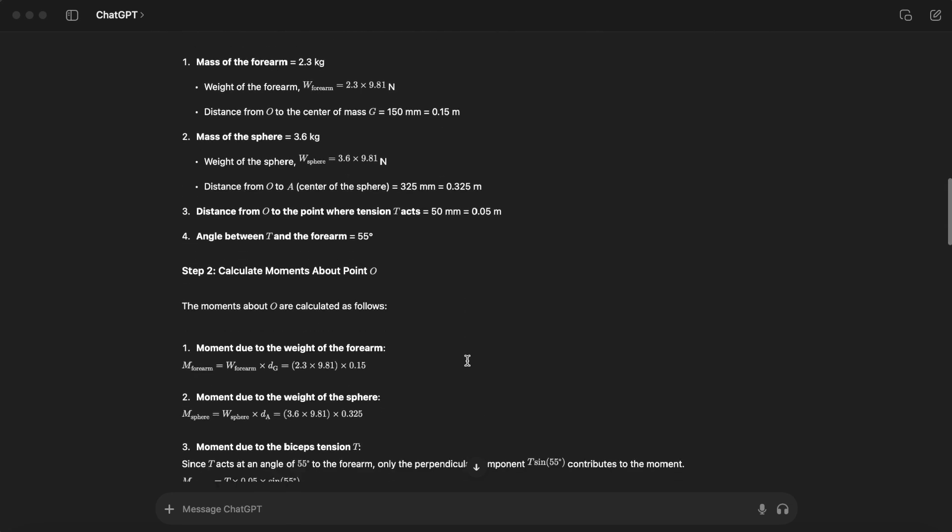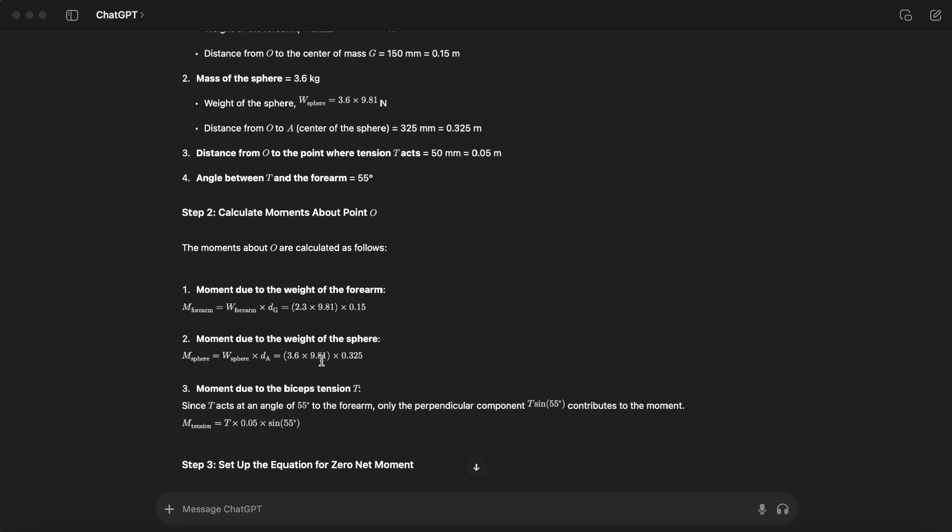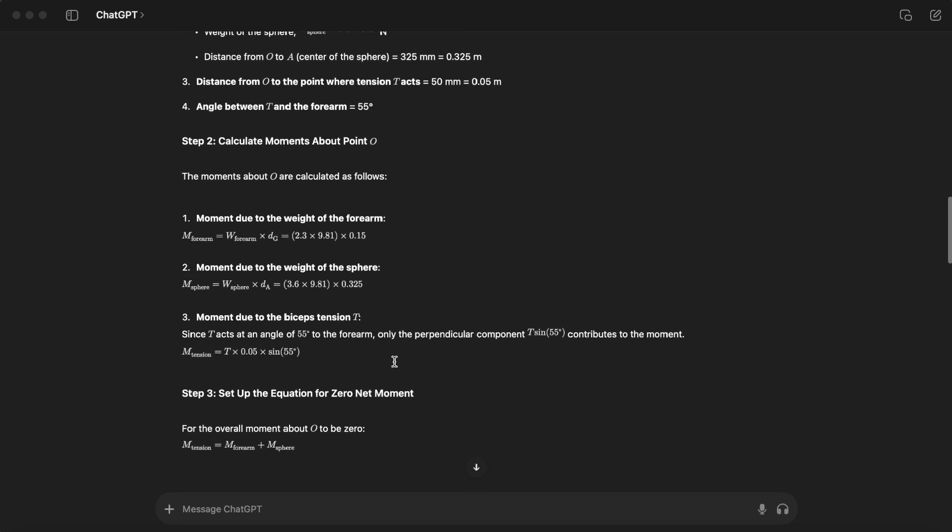The distance ChatGPT is using for finding the moment of the forearm is 0.15, which is not the correct distance. This has to be 0.15 times sine of 55. The sphere is fine. In the third part, it's saying that T acts on the angle 55, so the perpendicular component T sine of 55 contributes. This is not where sine of 55 should be.